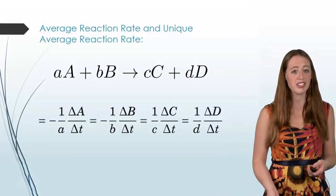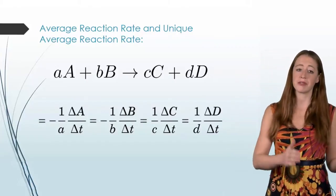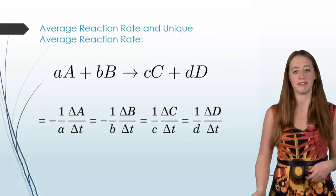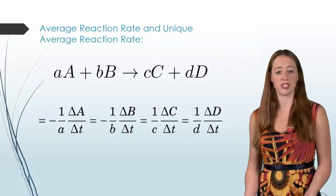So the formation of C and D when divided by their coefficients should be the same as the consumption of A and B, when divided by their coefficients. And so we call this the unique average reaction rate. And this is a useful term to have.